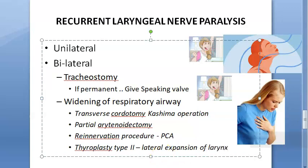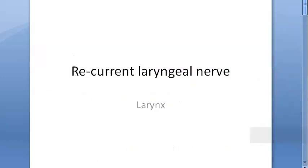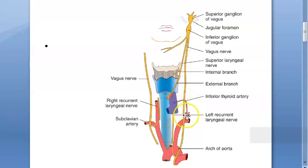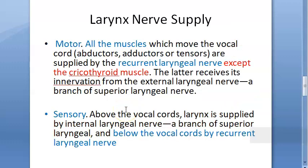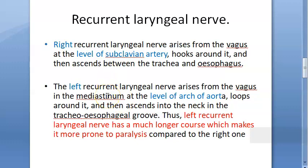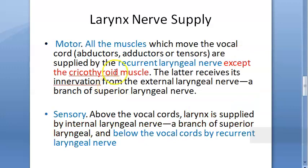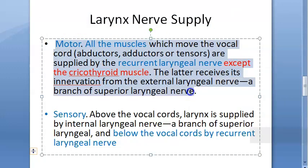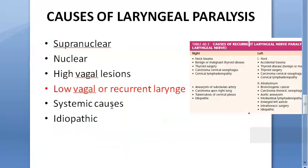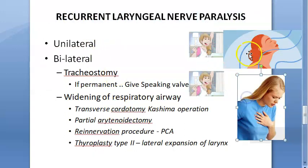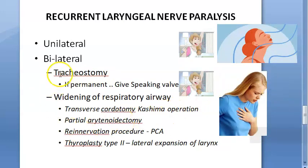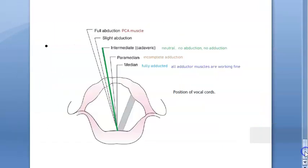To summarize this video on recurrent laryngeal nerve paralysis: we covered the anatomy of the recurrent laryngeal nerve, larynx nerve supply, the differences between right and left recurrent laryngeal nerves, what the recurrent laryngeal nerve supplies, causes of laryngeal paralysis, and how recurrent laryngeal nerve paralysis can be unilateral or bilateral. In bilateral cases patients have dyspnea and stridor, and various treatments are available. The embryological reason for the left nerve's longer course can be explored in separate videos.